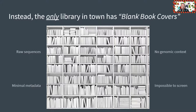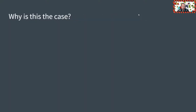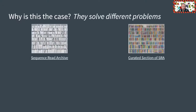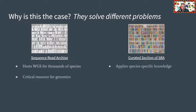So in order to effectively use the only library in town, you have to look at every genome. Why don't you get the descriptive book covers? Well, they solve two different problems. The first is the Sequence Read Archive, which stores whole genome sequencing for thousands of species and is a critical resource for genomics — for archiving, maintaining, and reproducibility. Whereas the curated section has taken a section of the SRA, say one particular species, and applied species-specific knowledge to it. In doing so, it made this one small section of the SRA much easier to use.